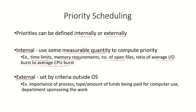There is also an external way of setting the priority of a process, set by criteria outside the purview of the operating system. It could be set by the administrator based on the importance of the process, the amount of funds paid by a user for using the system, or the department sponsoring the work.